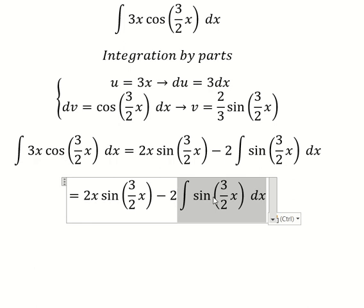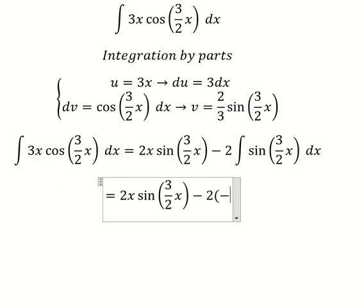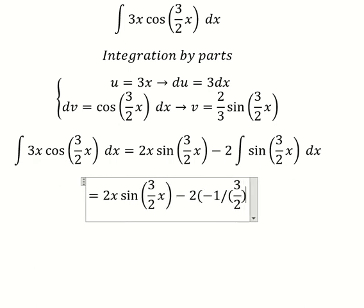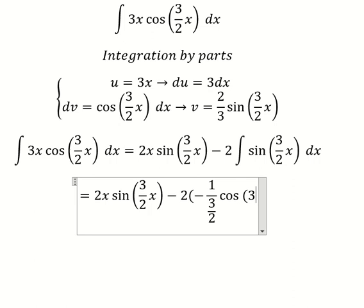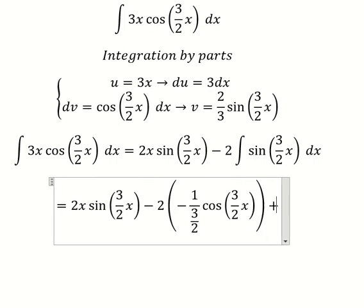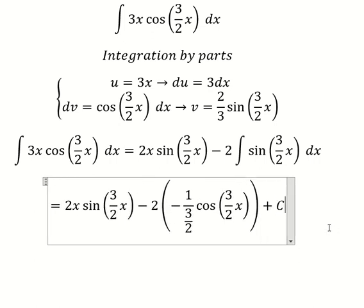This integrates to negative 1 over 3/2 cosine of 3/2 x, and then we add the constant C.